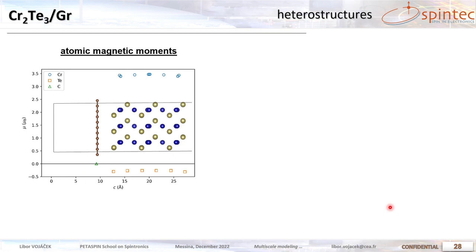This was all about chromium ditelluride itself. We also built the interfaces with the different 2D materials as I said. And here I just showed the graphene one. We look at the magnetic moments. So we can say that at the interface the tellurium and chromium atoms have very similar magnetic moments as further in the bulk. While the carbon of course the graphene is non-magnetic. So there is not strong effect on the magnetic moments from the interface.